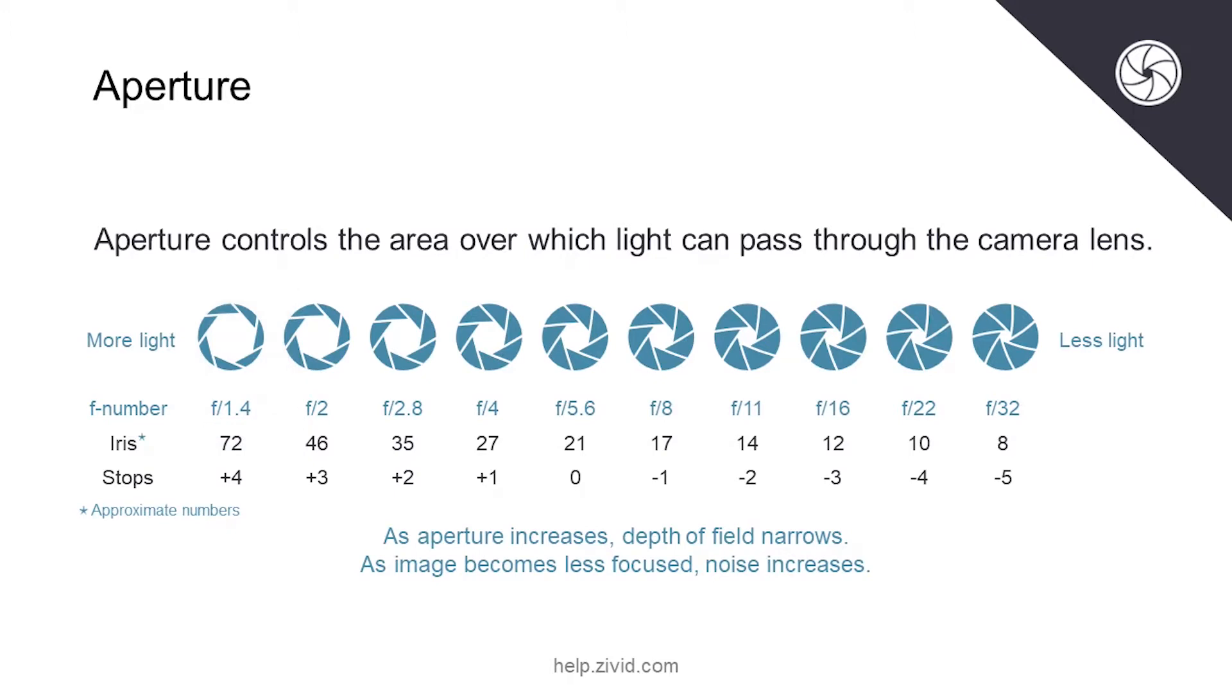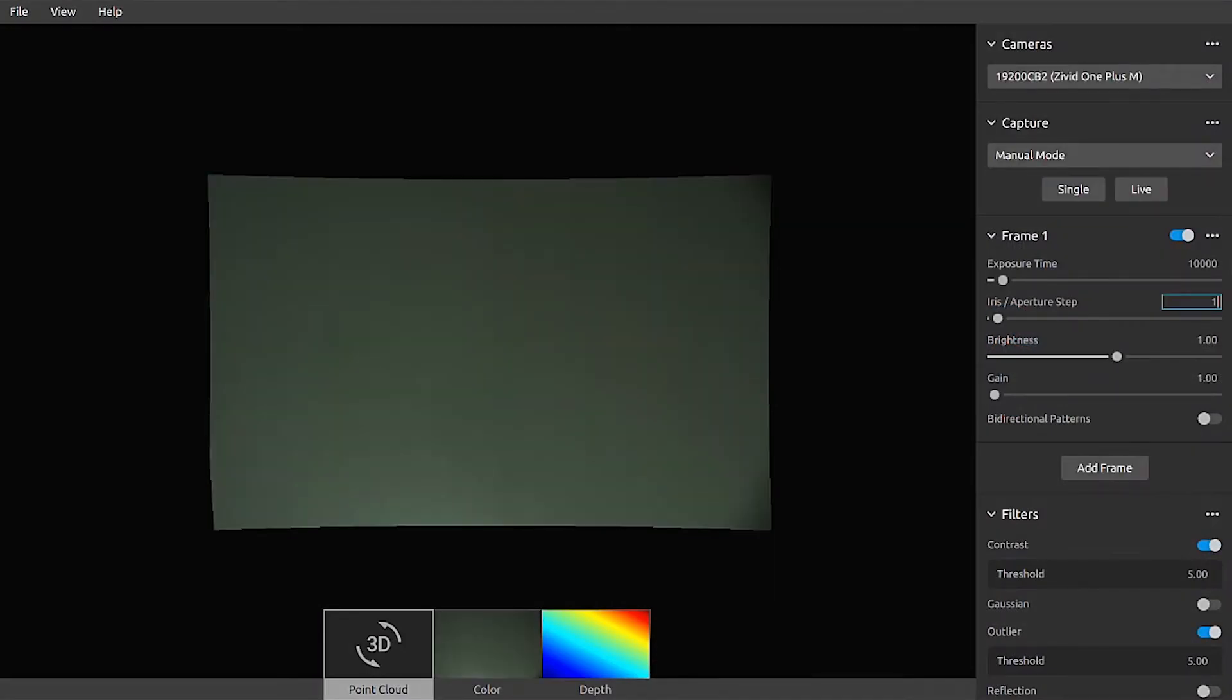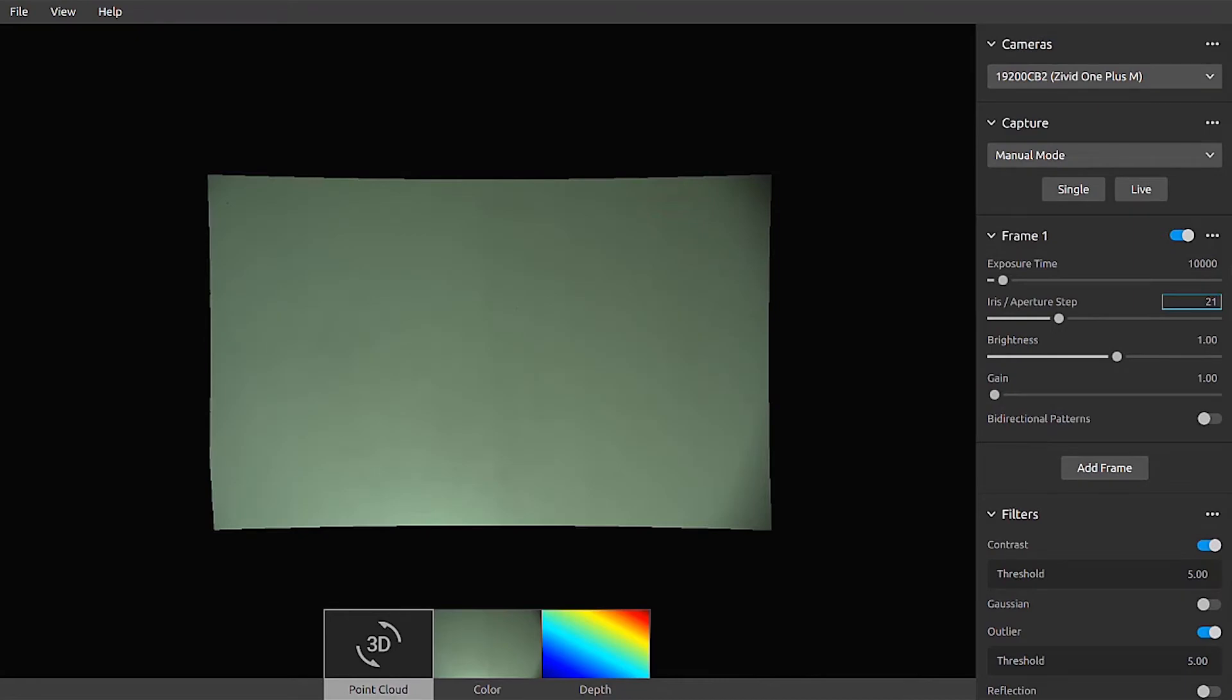The Zivid OnePlus camera has an integrated electromechanical iris that can be rapidly adjusted. The corresponding setting is therefore called the iris, and it is adjusted on a scale from 0 to 72, where 0 represents a completely closed pupil.